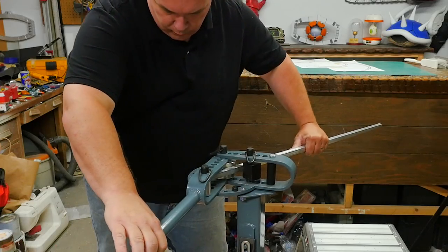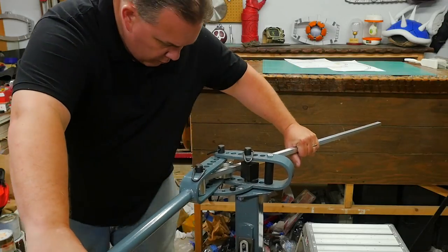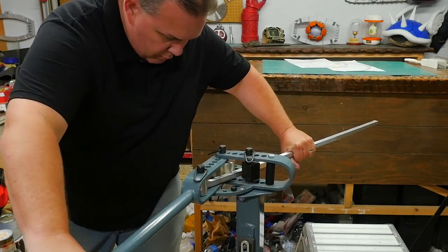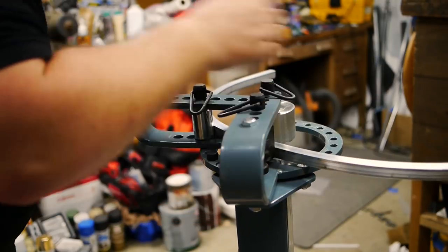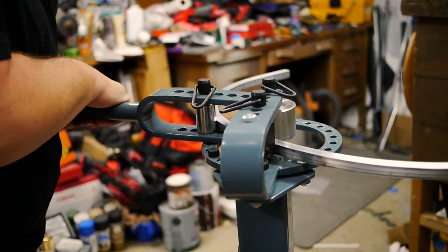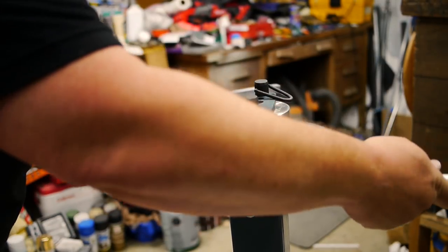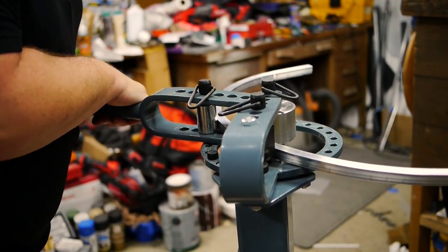Now this worked really well when I tested it on some rebar, but the 5 eighths inch aluminum was not really interested in getting bent. It took some odd stretching to hold the tool in place, brace opposite corners of the plywood base, and then actually bend the bar with my hip.